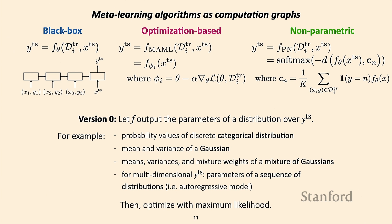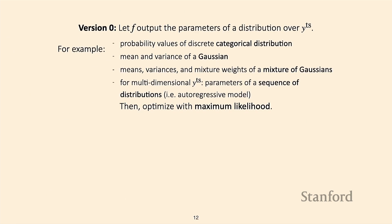Once you choose your distribution class over Y_test, you can optimize with maximum likelihood, which corresponds to the outer loss of your meta-learning algorithm. This is pretty simple — in fact, we've already been doing it. You can combine it with a variety of different meta-learning algorithms.